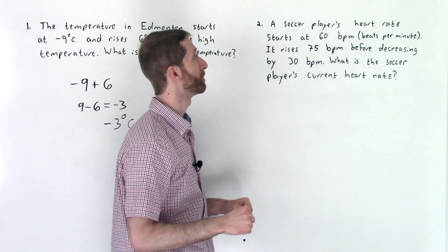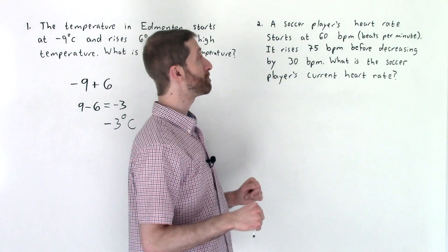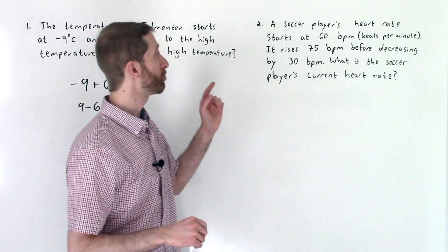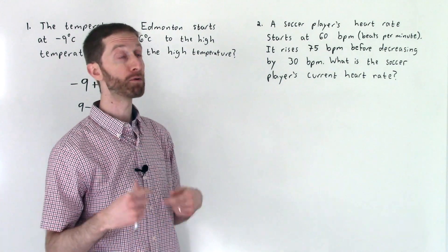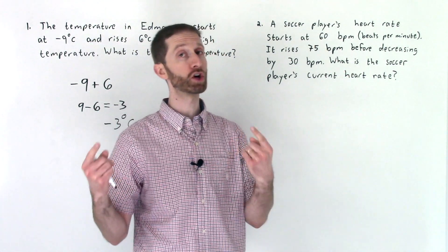Second word problem. A soccer player's heart rate starts at 60 BPM beats per minute. It rises 75 BPM before decreasing by 30 BPM. What is the soccer player's current heart rate?